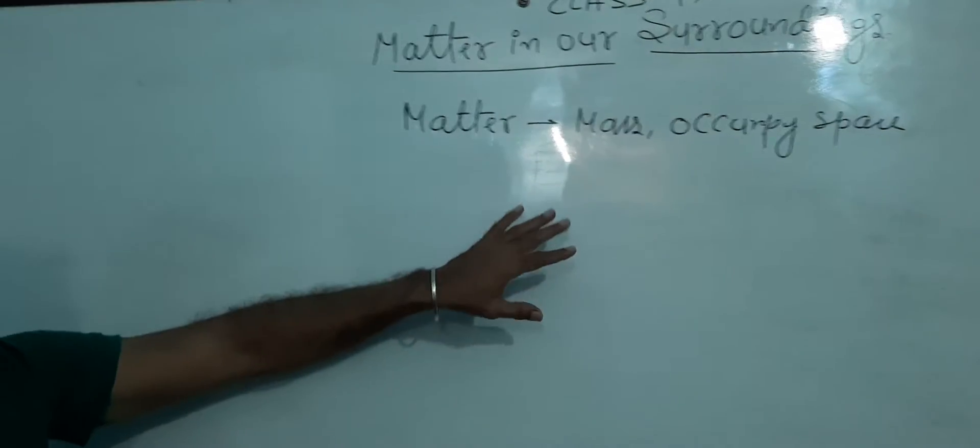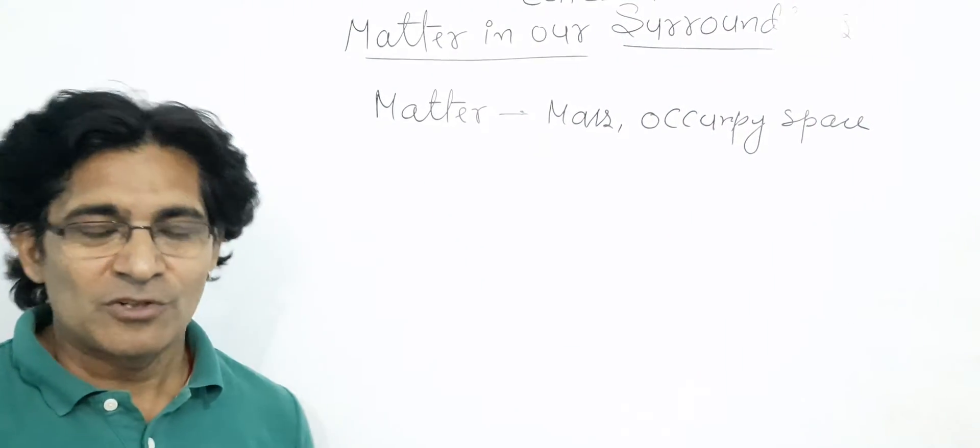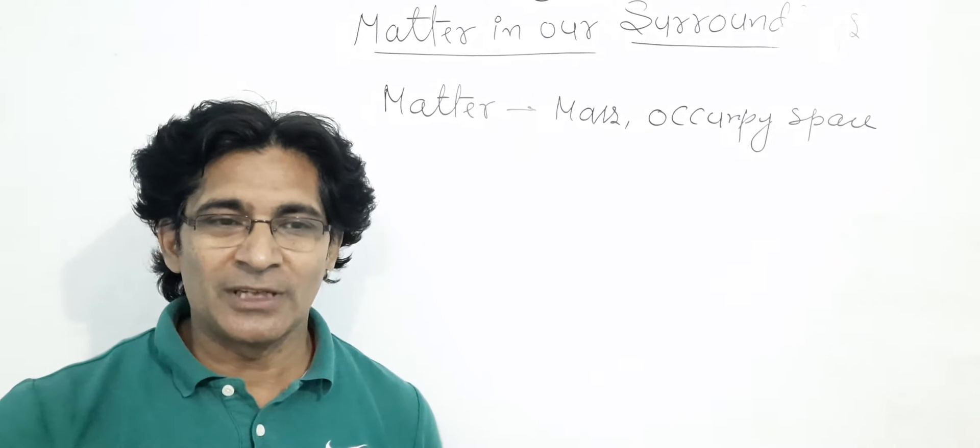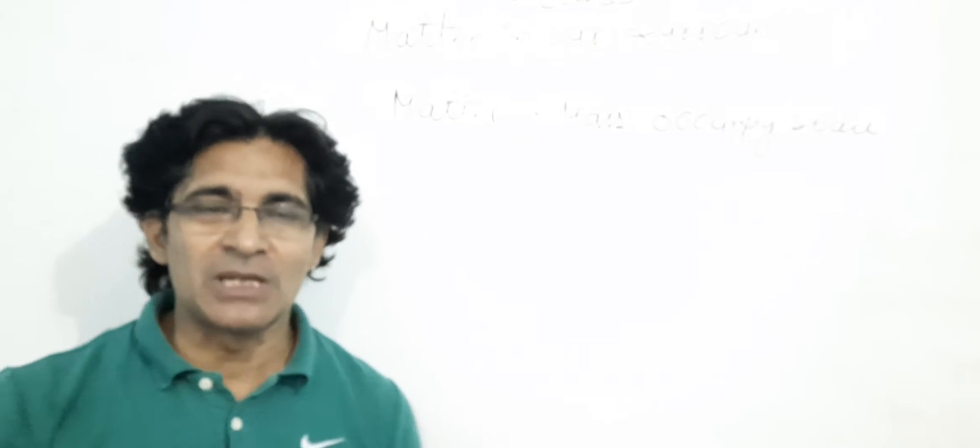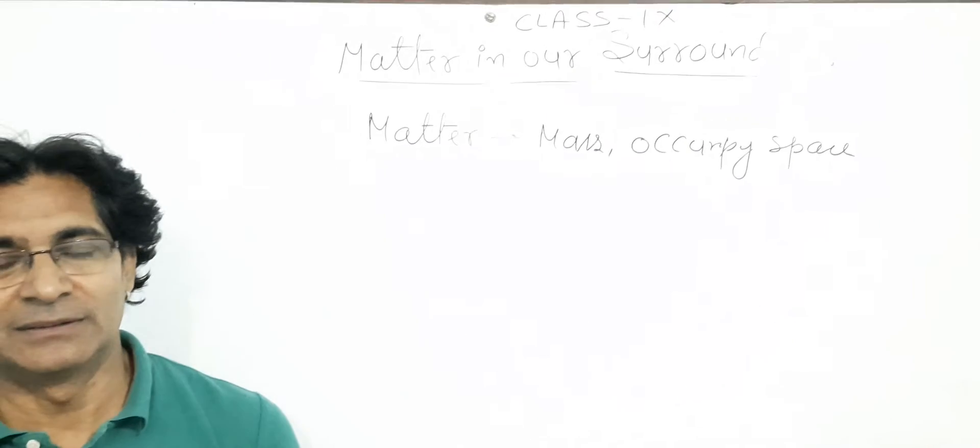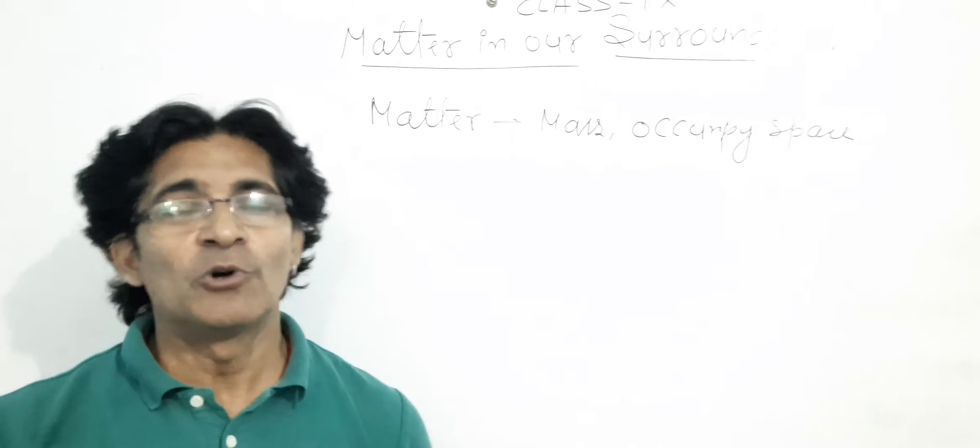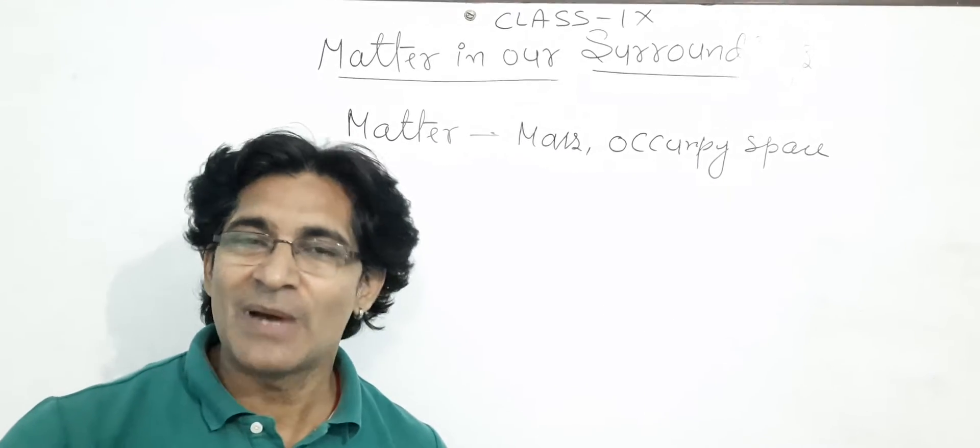This is known to us. The things which are visible to us are not visible to us, such as air, chair, table, walls. Whatever you see with your eyes is said to be the matter. Even the air which is not visible to you, only you can feel it, it also is known as matter.